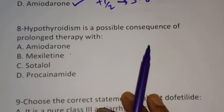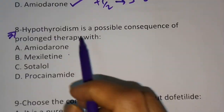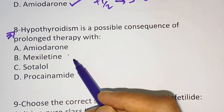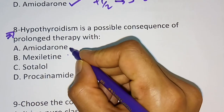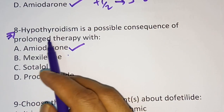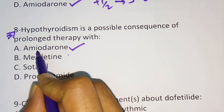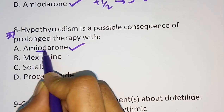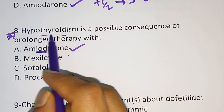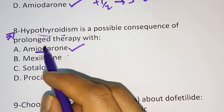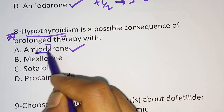Question 8: Hypothyroidism is a possible consequence of prolonged therapy with which drug? Options are amiodarone, mexiletine, sotalol, and procainamide. The correct answer is amiodarone. Amiodarone will cause hypothyroidism. A simple trick to remember this: look at the name amiodarone — it contains 'IOD', which refers to iodine. That is why it causes hypothyroidism.